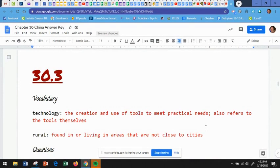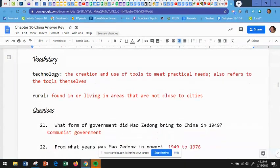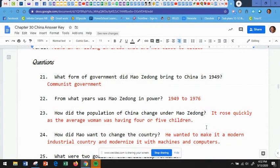All right, now we're going to wrap up with 30.3. And the vocabulary words here, there's like two of them. You've got technology, which is the creation and use of tools to meet practical needs. It also refers to the tools themselves. So the important word for technology is tools. Rural, we've talked about that word before. It's found in or living in areas that are not close to cities.